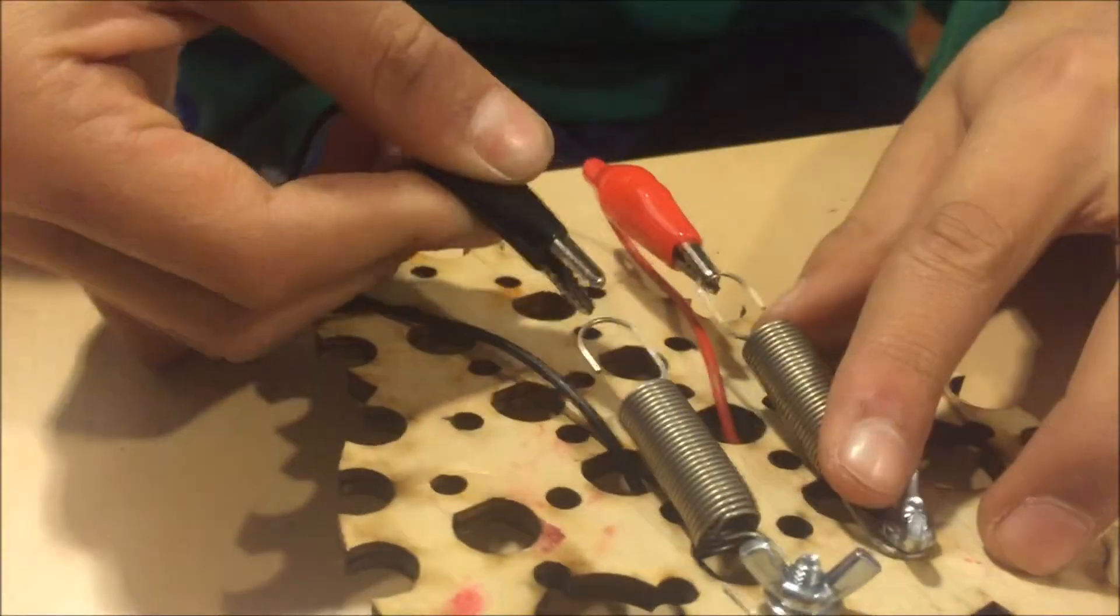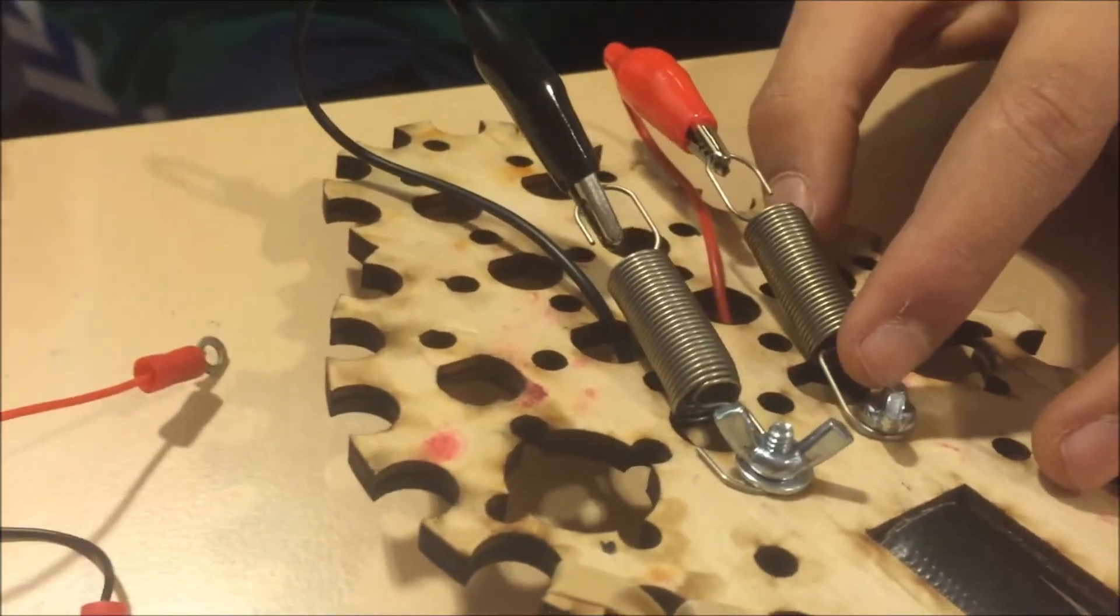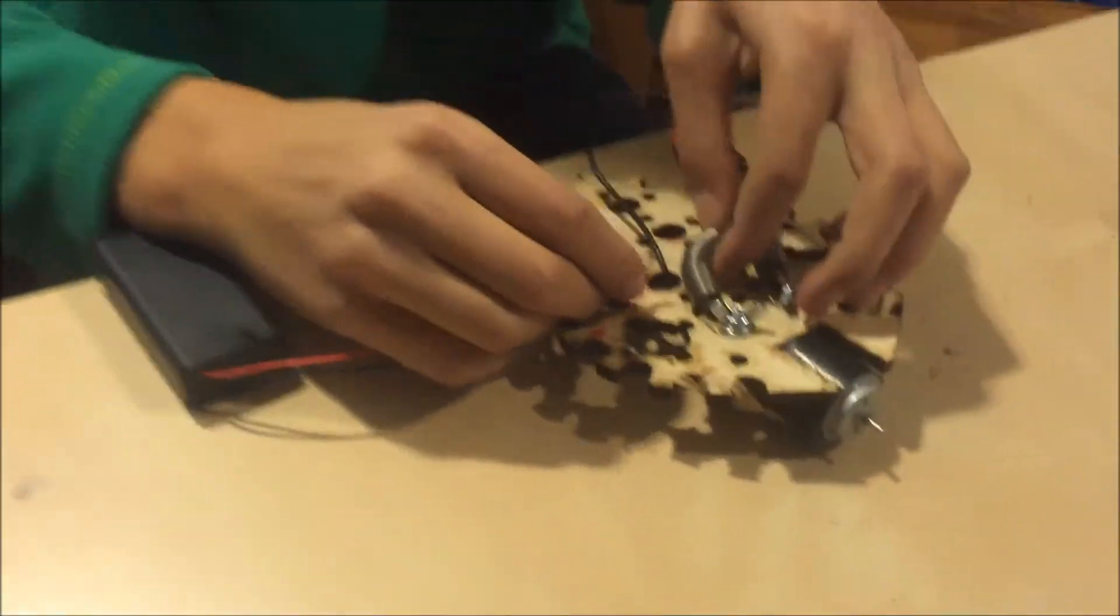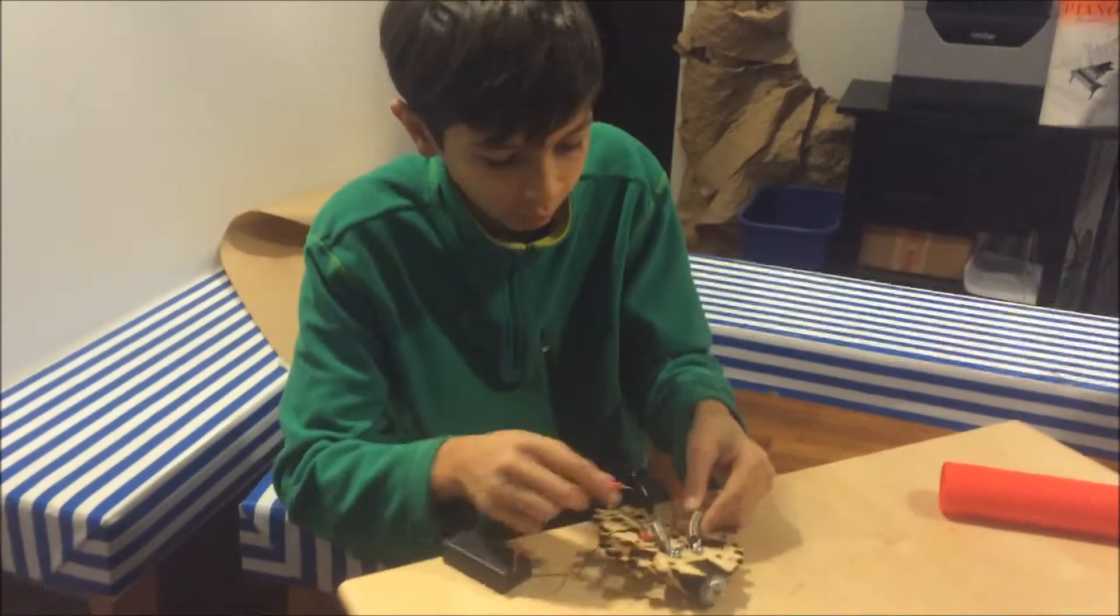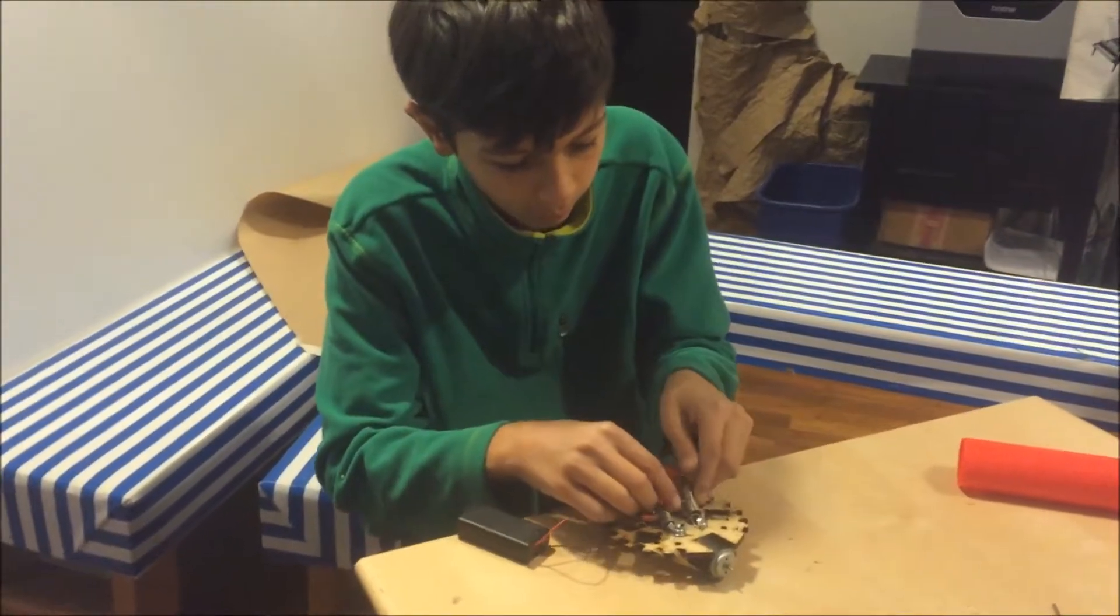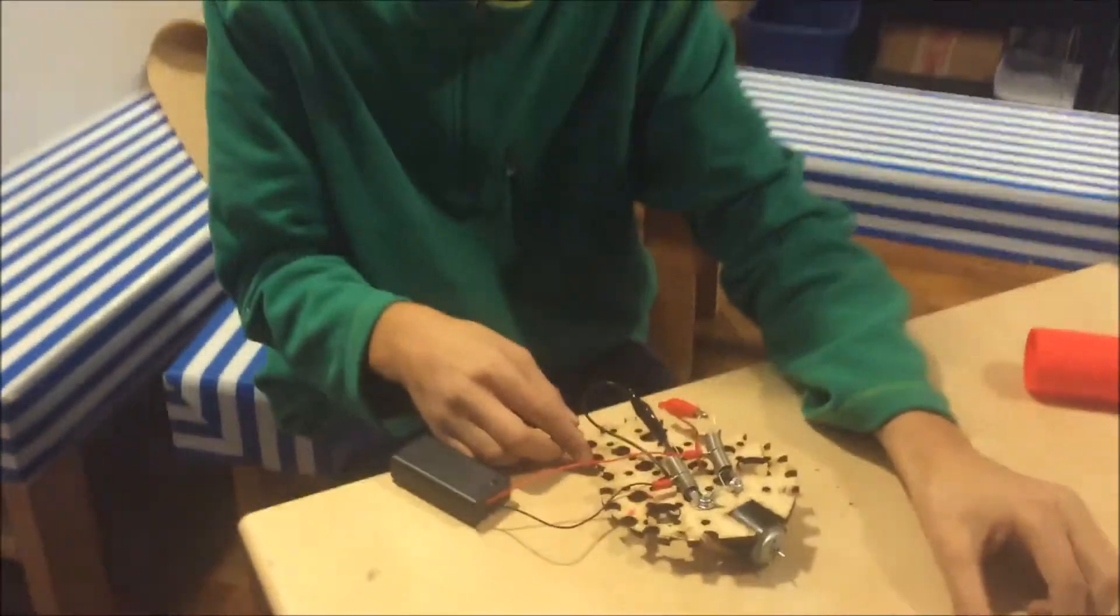And make sure you choose a red and black spring. Then you can just put in the tabs to the springs because it's really easy. And you can see the motors running right now.